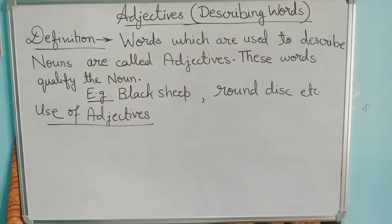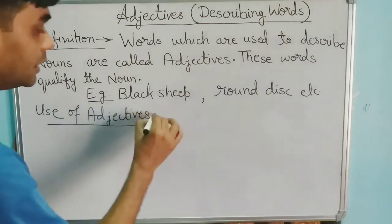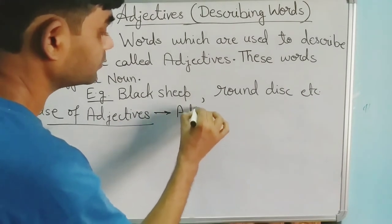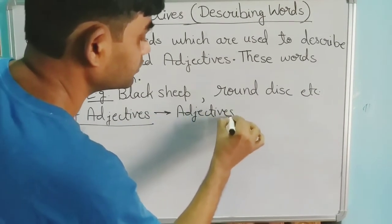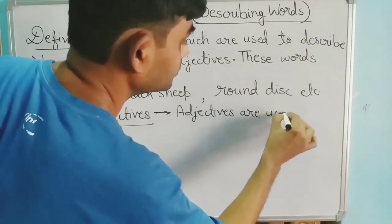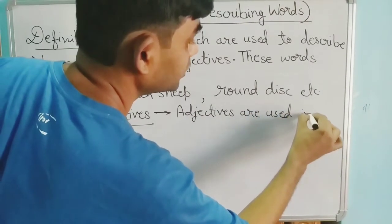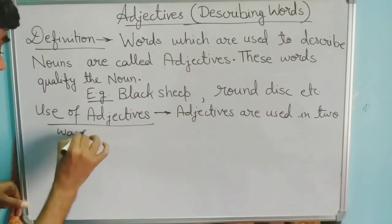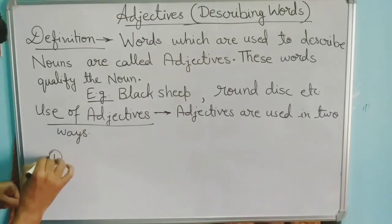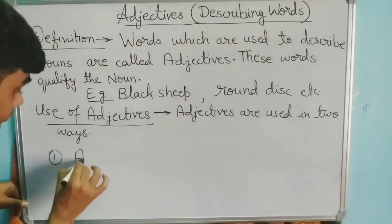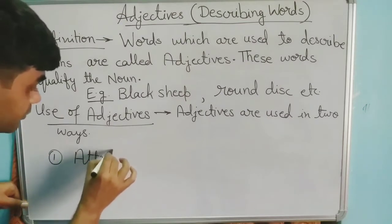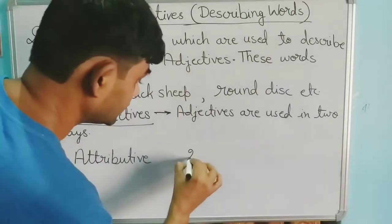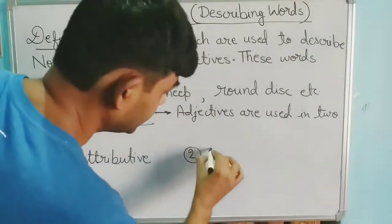Adjectives are used in two ways. The first one is Attributive and the second one is Predicative.